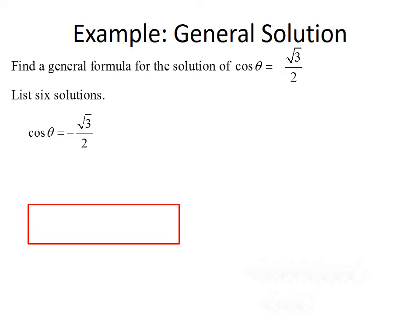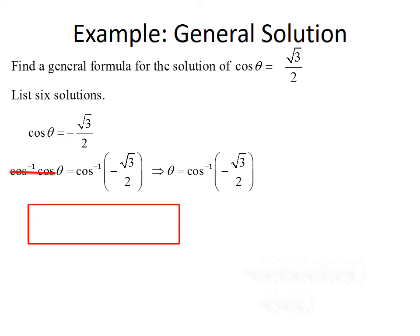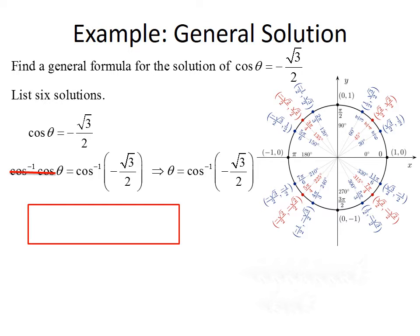We start with our equation cosine of theta equals negative root 3 over 2. Since the trig function is already isolated, the next thing we want to do is take the inverse cosine of both sides to cancel out the cosine. This leaves us with theta equals the inverse cosine of negative root 3 over 2. Negative square root of 3 over 2 is one of our common values present on the unit circle, so we can use the unit circle to evaluate this inverse cosine.